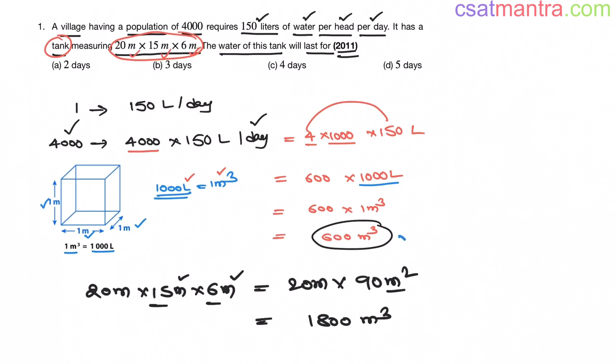So 4000 people use 600 meter cube water per day. Then 1800 meter cube water will last for 3 days my friends. 1800 by 600. This is 3. So our answer is B.